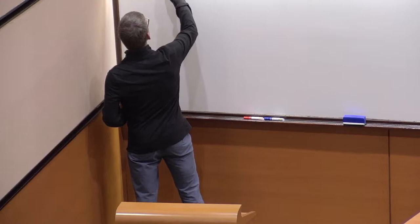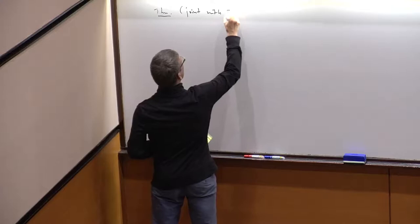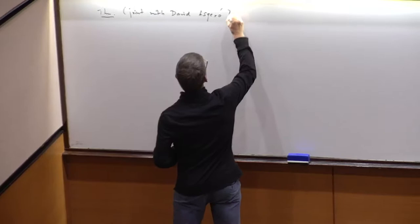So this is the following statement. This is joint work with David Aspro, and it shows that MM double plus implies the Axiom Star.